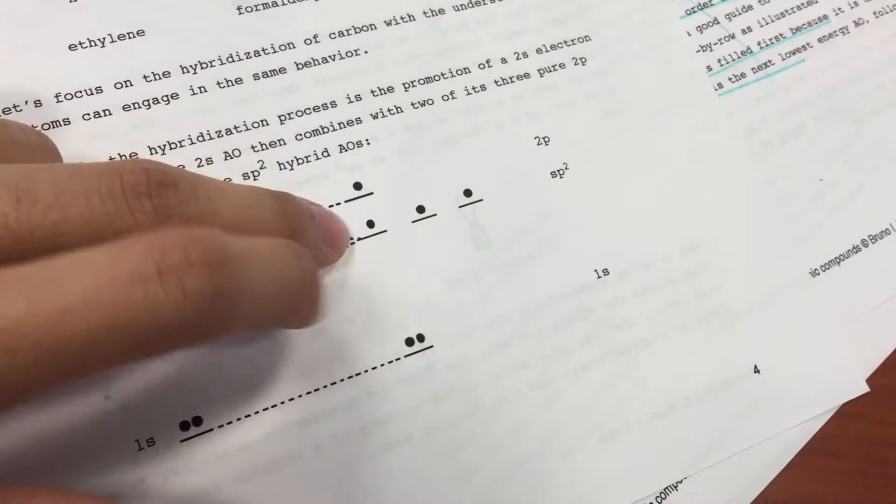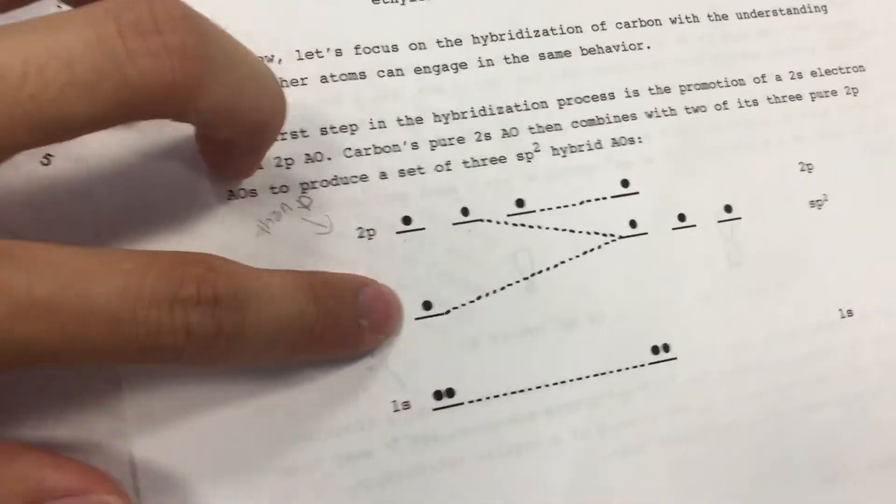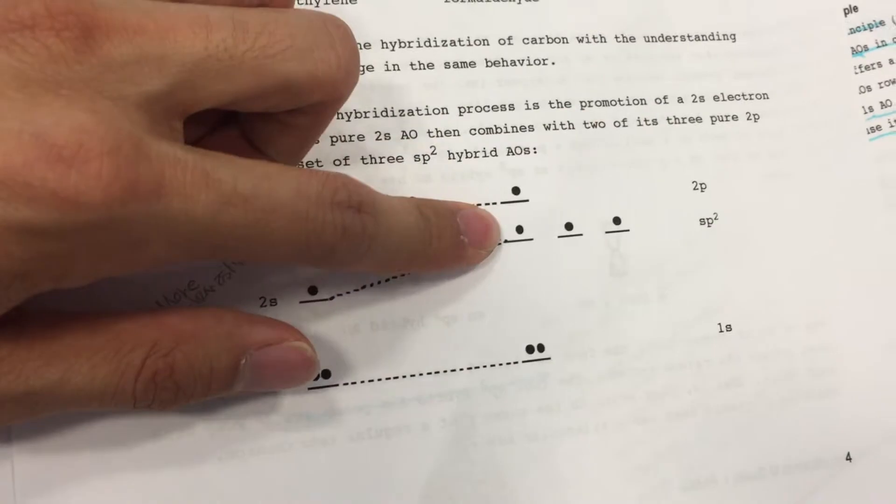These sp2 orbitals are even better than sp3 orbitals because only 2 p orbitals go in to fuse with the 1, 2s orbital, right? So you have less of the bad stuff mixing with the good stuff. So you get better energy, lower in energy, aka more stable. Alright, and that's even more dramatic when you have an alkyne or a triple bond.